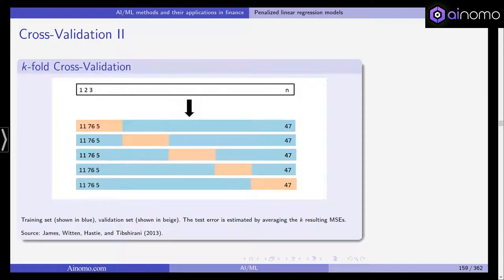It is quite simple to extend this to so-called k-fold cross-validation. We again start with n observations and subdivide them into k bins — for example, five bins in five-fold cross-validation. The first bin is used as the test data and the model is fitted on the remaining observations. We then repeat this for each bin of size n divided by k. This gives k resulting mean squared errors, which we average to get an estimate of the test error rate.